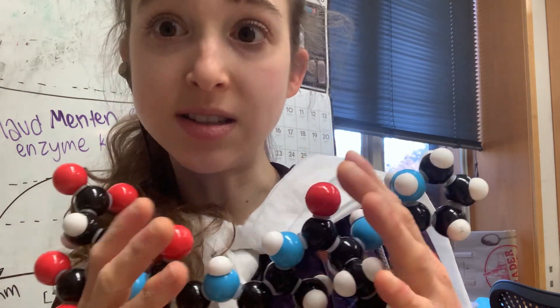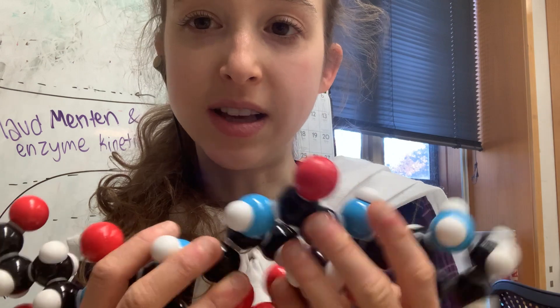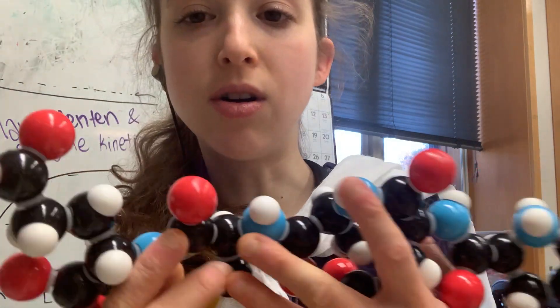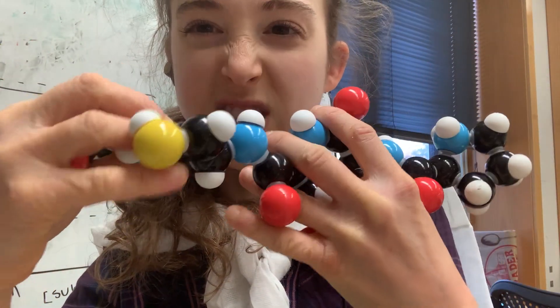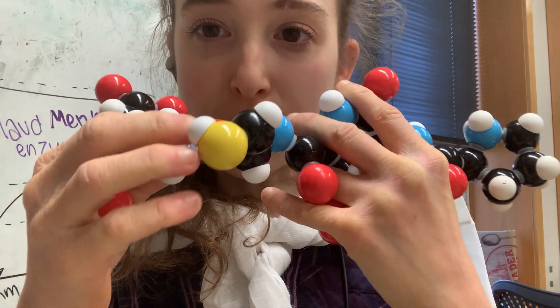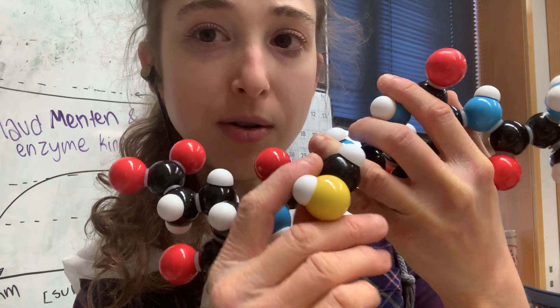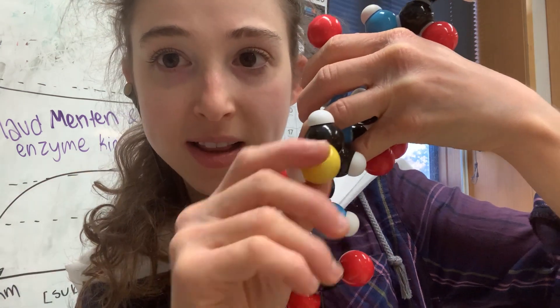I sometimes say 'amino acid' and sometimes 'residue.' Individual protein letters are called amino acids because they have an amino group on one end and a carboxylic acid group on the other. When they combine, they use those parts to join, so now they're no longer amino acids — what remains is called a residue. Each amino acid has a unique side chain that sticks out, and when we talk about residues sticking into the active site, we're talking about that side chain.